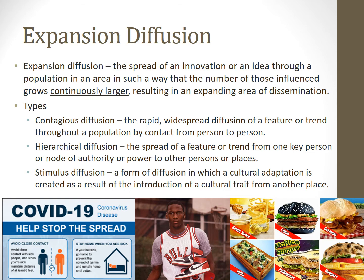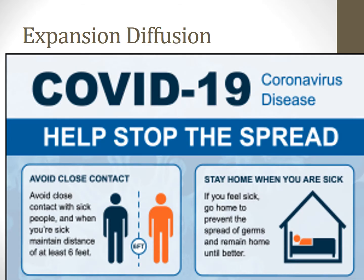The fact that it expands doesn't tell us how it expands, so we have specific types of expansion diffusion to clarify how it grows continuously larger over time. Contagious diffusion is the rapid, widespread diffusion of a feature or trend throughout a population by contact from person to person. Probably the best example is a virus like COVID-19. We have contact with a person who has it, and now we have it and we spread it to people we come into contact with. And how do we try to stop it? By limiting contact and tracing our contacts to try and stop the spread — stop the diffusion of this virus.